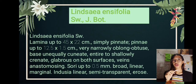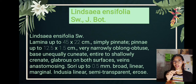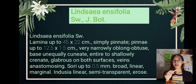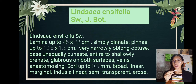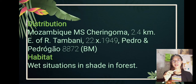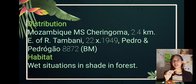The lamina is up to 45 x 22 cm, simply pinnate. The pinnae are up to 12.5 x 1.5 cm, very narrowly oblong, obtuse. Base unequally cuneate, entire to shallowly crenate, glabrous on both surfaces. Veins anastomosing. The sori are up to 0.5 mm, broad, linear, and marginal. The indusium is linear, semi-transparent, and erose. The habitat is wet situations in shade in forest.